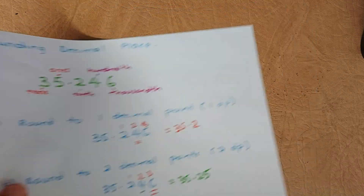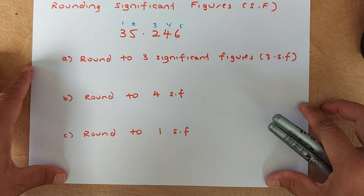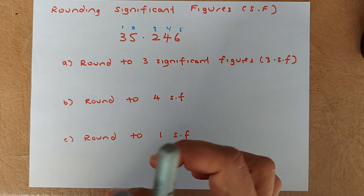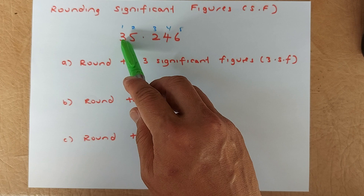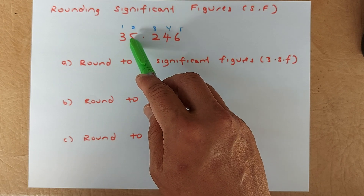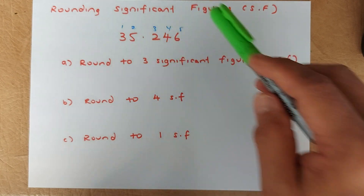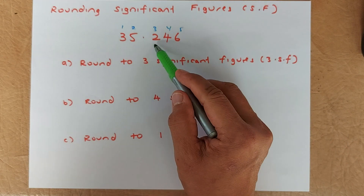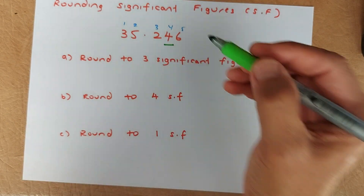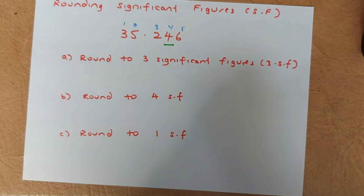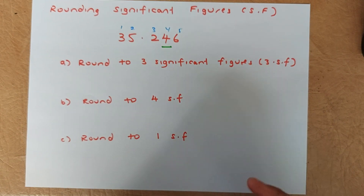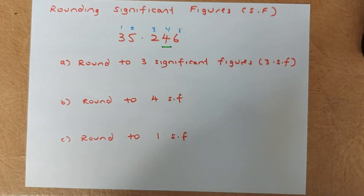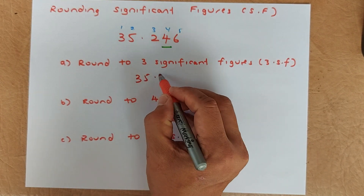Now we're going to do something slightly different: significant numbers. It's similar but slightly different. Instead of counting from the decimal point, the first significant number is three, the second is five, then two, four, and six are the third, fourth, and fifth. The principle is still the same. If asked to round to three significant figures, you look at the fourth number, which is four. Since four is less than five, the two remains, so the answer is 35.2.